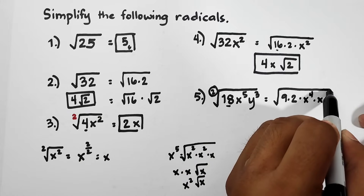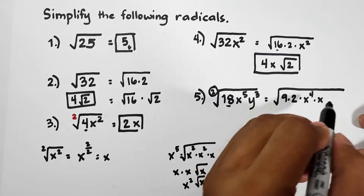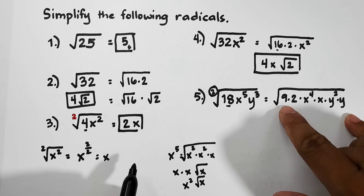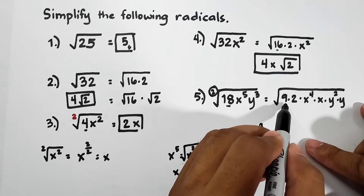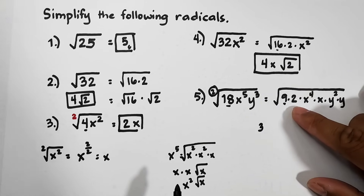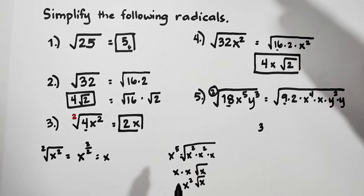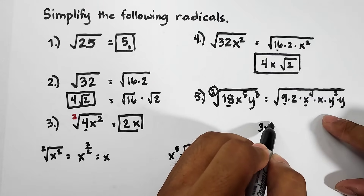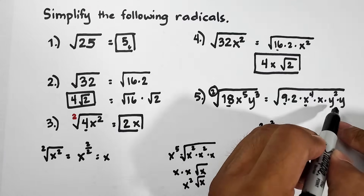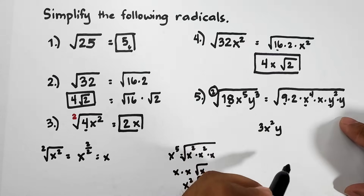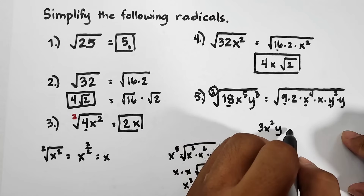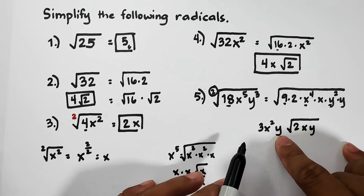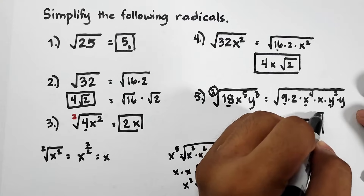For y cubed, you can factor it out as y squared times y. This is still y cubed. Now extract the square roots: the square root of 9 is 3, put it outside; square root of 2 is not a perfect square so it stays inside; the square root of x to the 4th is x squared; the square root of y squared is y, which goes outside; and the remaining y stays inside. So the final answer is 3x²y times the square root of 2xy.